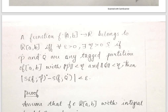If f is Riemann Integrable with epsilon equal to e, and P-dot and Q-dot are any two tagged partitions of [a,b], then |S(P-dot) − S(Q-dot)| < epsilon. That is the proof.